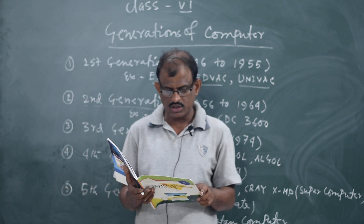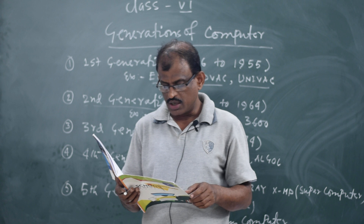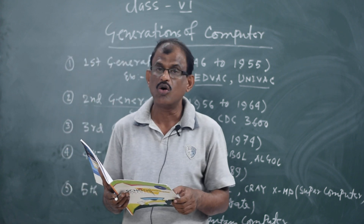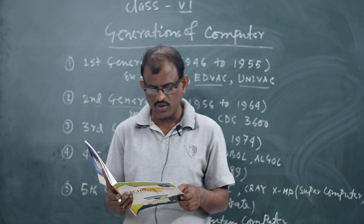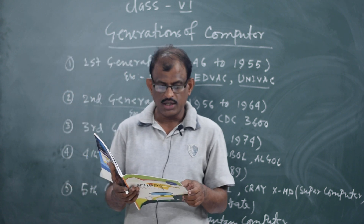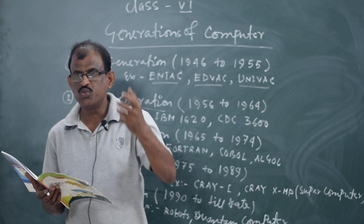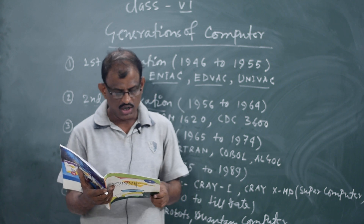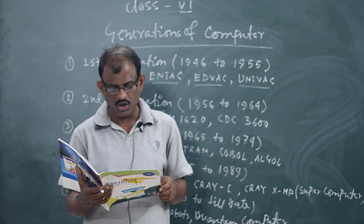Fifth generation computers use parallel processing hardware and artificial intelligence. The programming languages used are C, C++, Java, and other high-level programming languages. The main goal of this generation is to develop computers able to recognize voice, images and graphs, and solve highly complicated problems including decision making and logical reasoning.